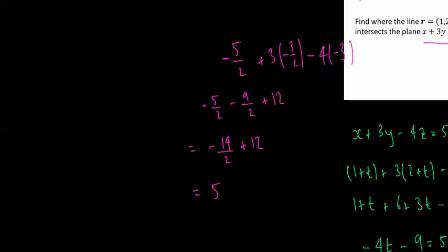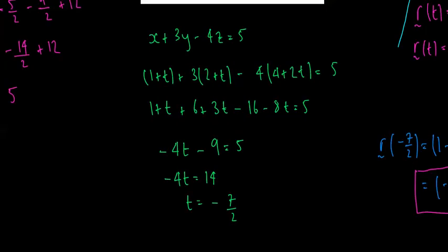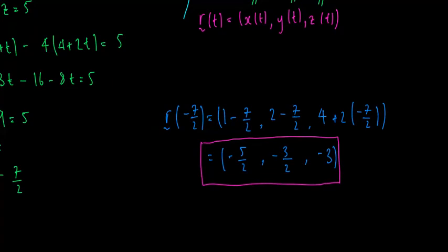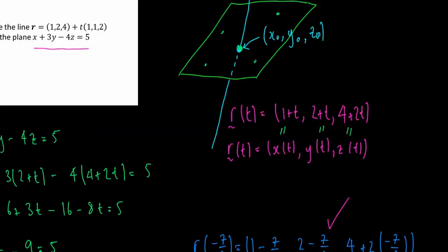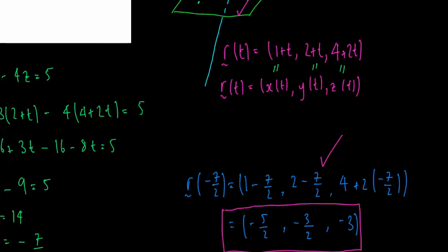So that means that point (negative 5 over 2, negative 3 over 2, negative 3) is on the line and it's on the plane. Hence, it must be the point of intersection. So have a go at the next question and check it with the solutions online. Good luck.